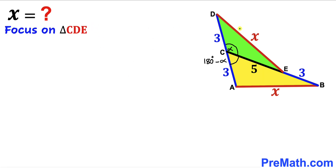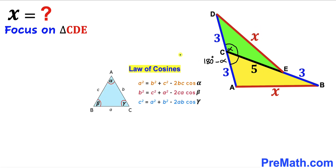Now let's focus on the green triangle CDE, whose side lengths are 3, 5, and X, and the angle in between is alpha. Let's recall the law of cosines. For a triangle ABC with sides lowercase a, b, c and corresponding angles alpha, beta, and gamma respectively, we have three law of cosines formulas.